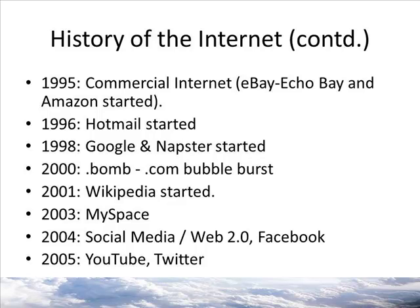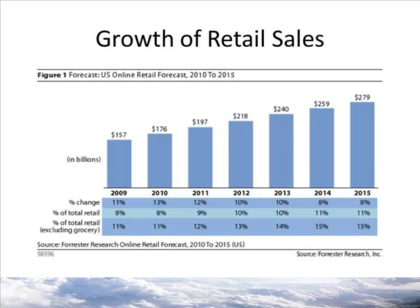Wikipedia began in 2001. In 2003, MySpace was started, becoming the most popular social network in the world until Facebook overtook it. Later, internet giants like YouTube and Twitter were founded. This chart from Forrester Research shows the growth and projected growth of online retail sales in the United States. By 2015, it is expected to exceed $280 billion. The move to online business has been a massive change over a relatively short period of time.